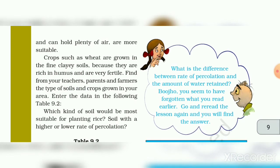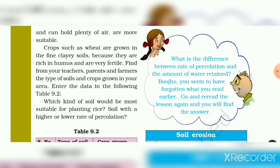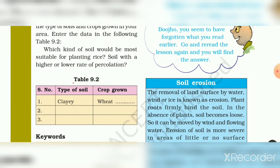You can find the types of soil and crops grown in Table 9.2. All students, please look at Table 9.2. It lists soil types such as clay soil for wheat, sandy soil, and loamy soil alongside the crops grown in each.